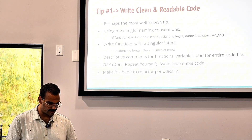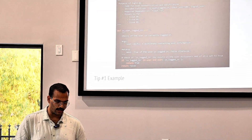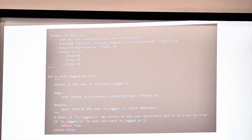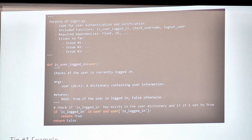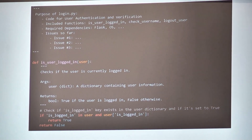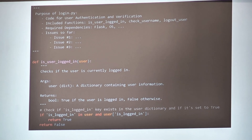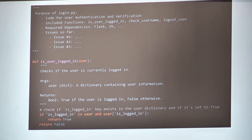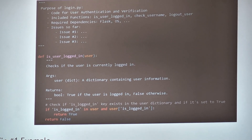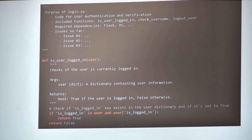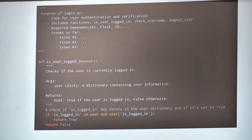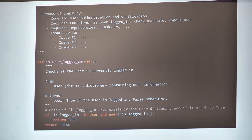I'll show some simple examples for commenting. At the beginning of every code file, make sure to state the purpose of that particular file — what it does, what functions are included, what dependencies it requires if it's a large file with external libraries. If you're collaborating, also mention any issues you've encountered so far, so the next person can get right to work instead of scanning the entire codebase to find the problem.